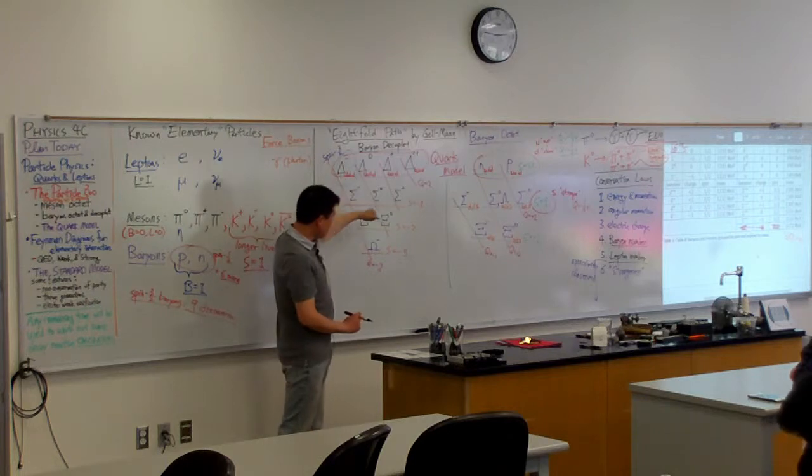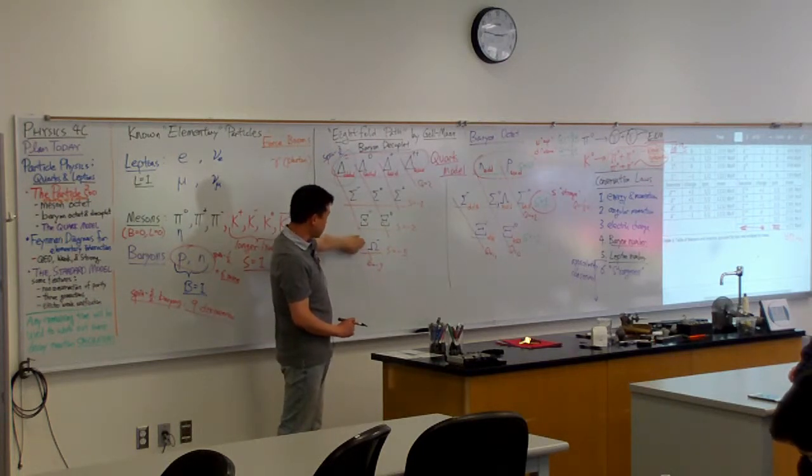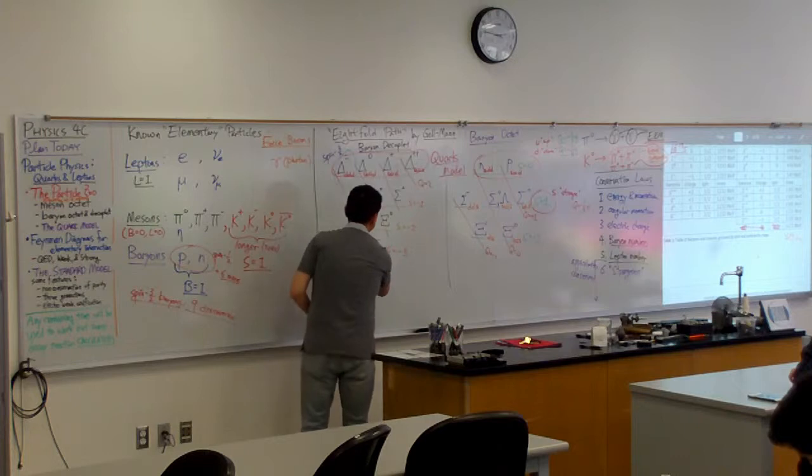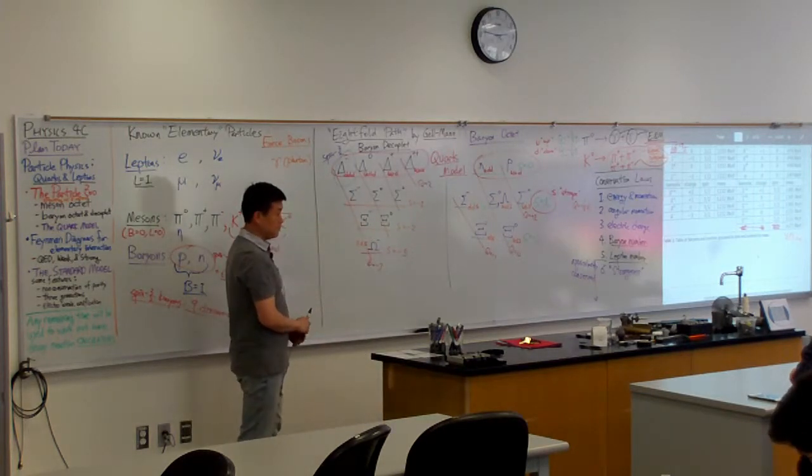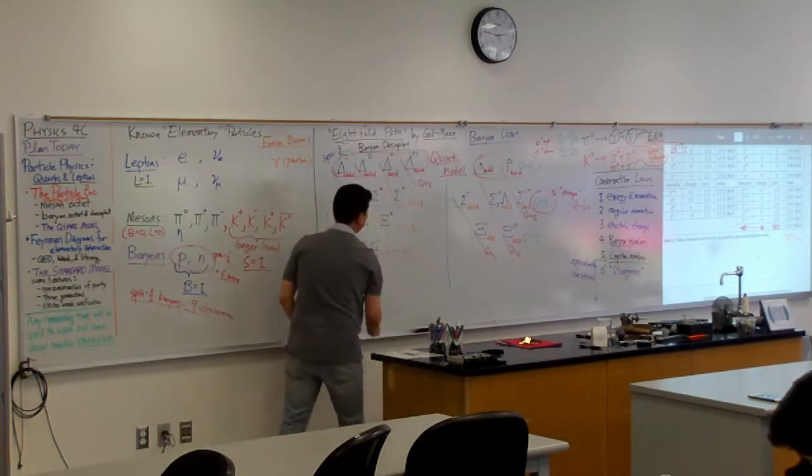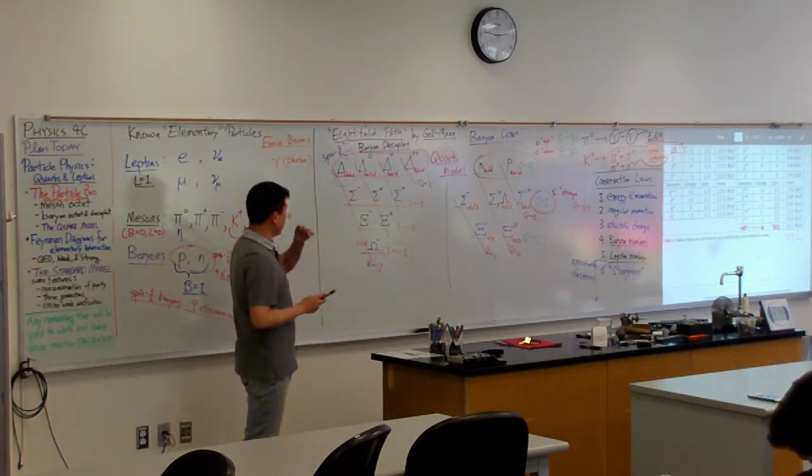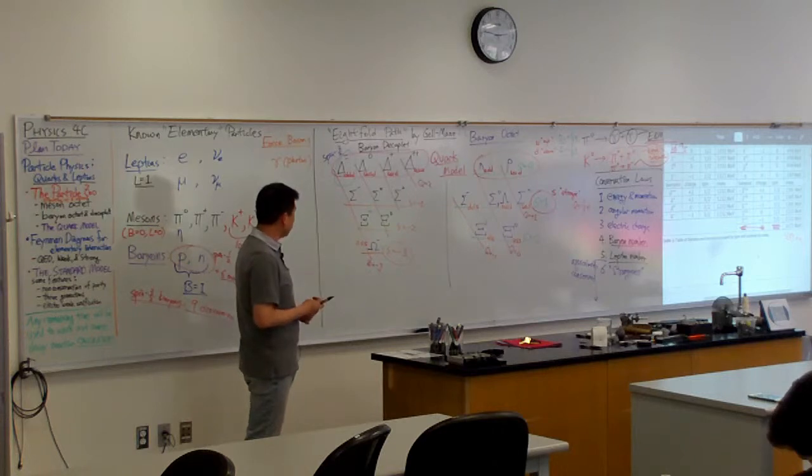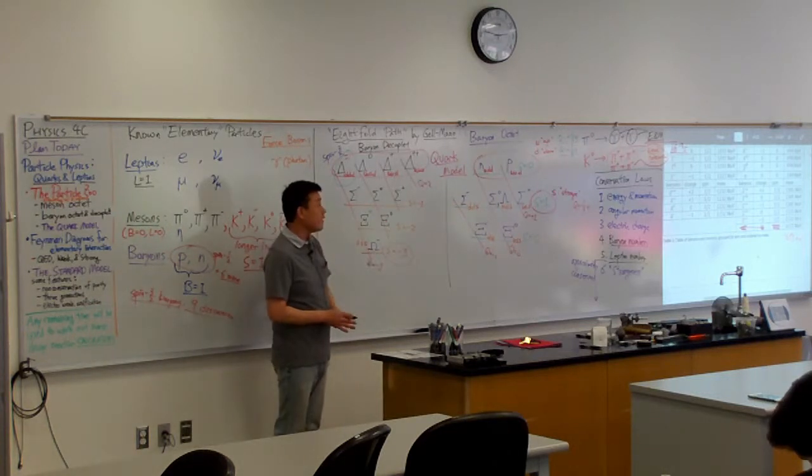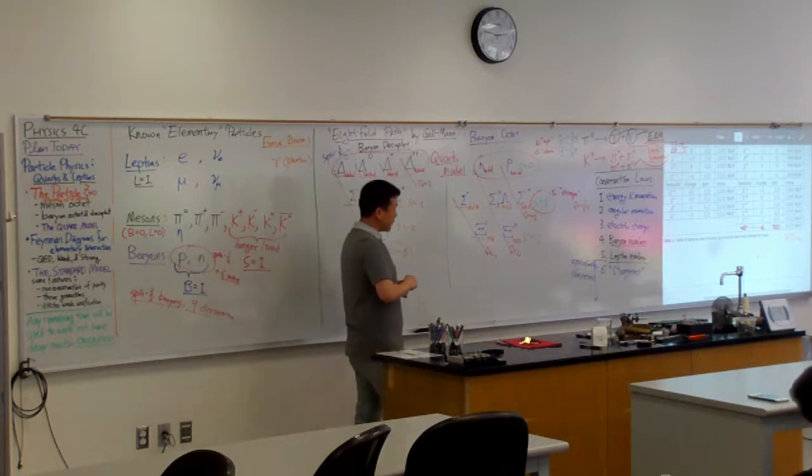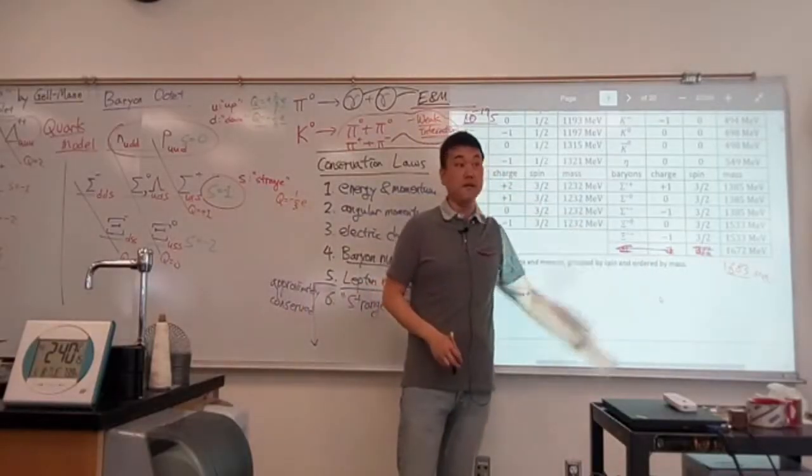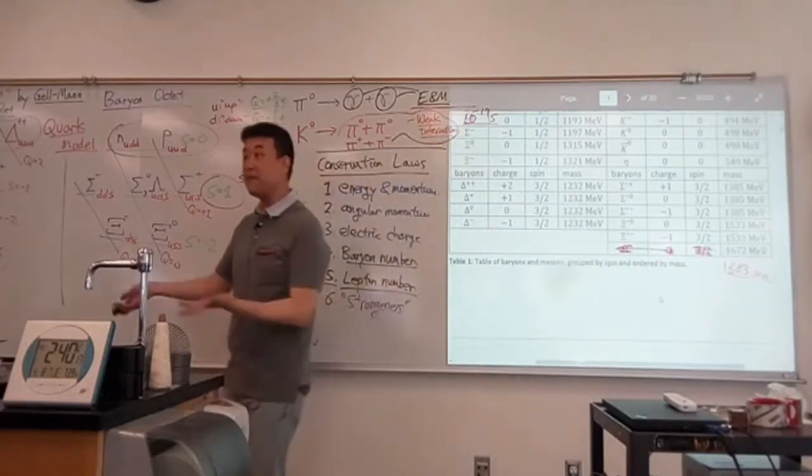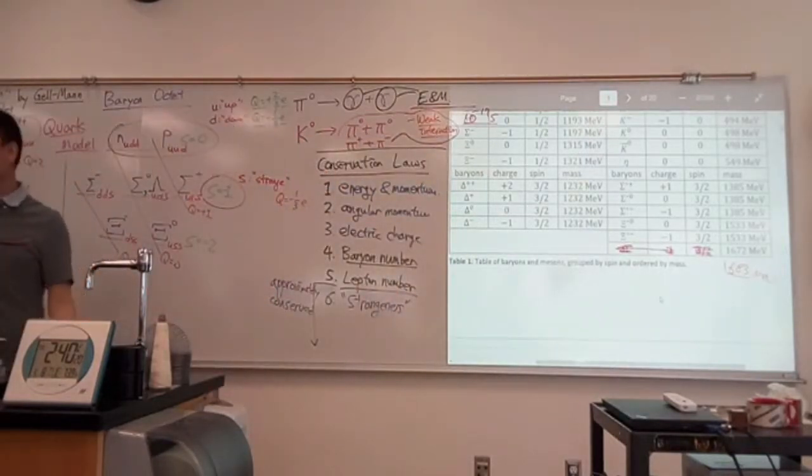But the thing that's new here is now this is the particle that must have three strange quarks, explaining its strangeness of minus three. And explaining what else? Its charge of minus one. And at this point, you would infer that this additional mass of 150 MeV, that must be how much heavier strange quark is compared to up and down quarks.